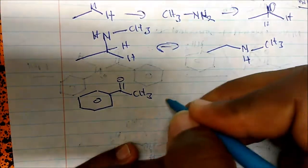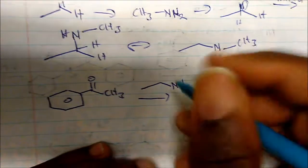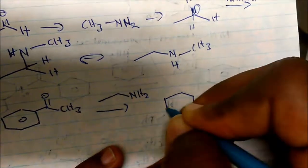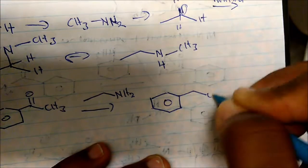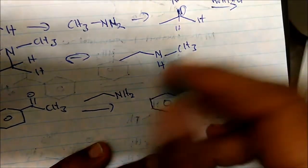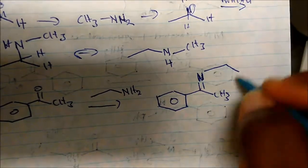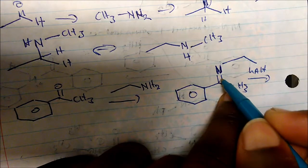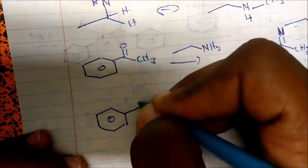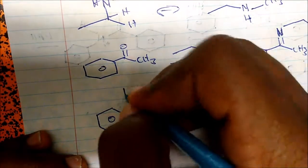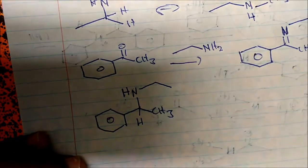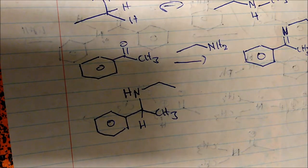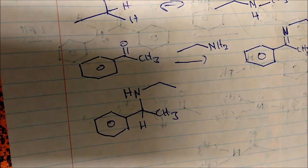If I take acetaldehyde and add ethylamine, we replace the oxygen with a double bond to nitrogen and lose two hydrogens, so we have the ethyl group attached. When I reduce with lithium aluminum hydride, following the same pattern, I get my CH3 bonded to nitrogen, still have my R group, and I gain a hydrogen — so this is another way of creating secondary amines.